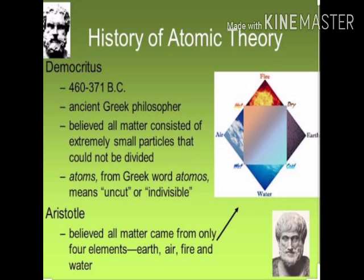First we will see the history of atomic theory. Democritus, who was an ancient Greek philosopher, believed that all matter consisted of extremely small particles that could not be divided. He called these atoms, which meant uncut or undivisible. Aristotle believed that all matter came from only four elements: earth, air, fire and water.